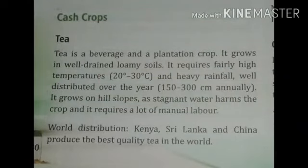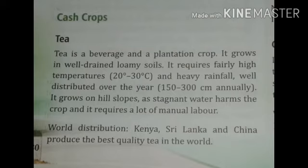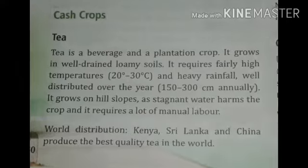Now we will see cash crops. Tea is a beverage and plantation crop. It is grown in well-drained loamy soil. It needs high temperature, 20 to 30 degrees Celsius, and heavy rainfall of 150 to 300 centimeters annually. It is grown on hill slopes, as stagnant water harms the crops, and it requires a lot of manure and labor.